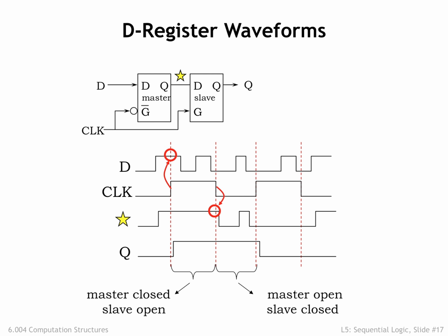Now let's just look at the Q signal itself for a moment. It only changes when the slave latch opens at the rising edge of the clock. The rest of the time, either the input to the slave latch is stable or the slave latch is closed. The change in the Q output is triggered by the rising edge of the clock, hence the name positive edge-triggered D register. The convention for labeling the clock input in the schematic icon for an edge-triggered device is to use a little triangle. You can see that here in the schematic symbol for the D register.